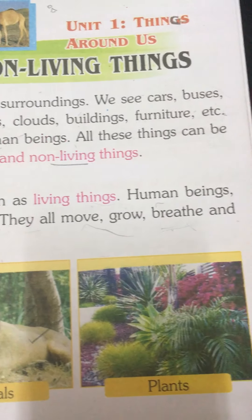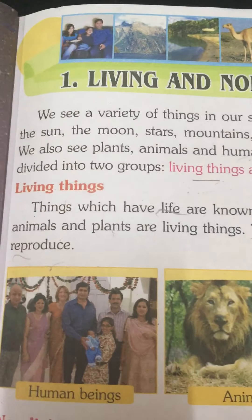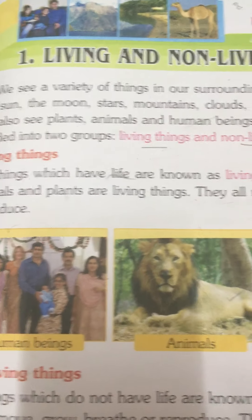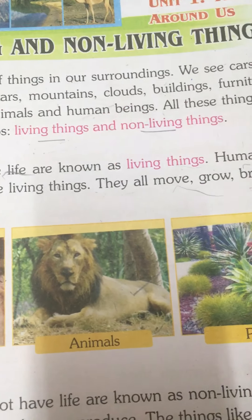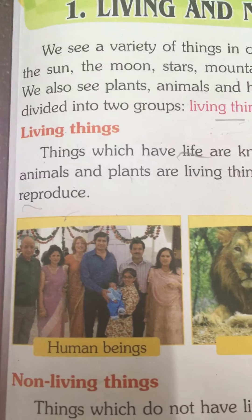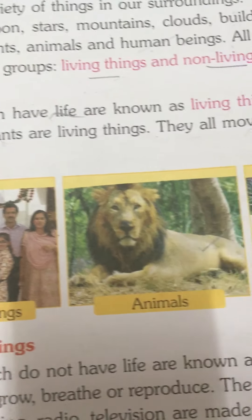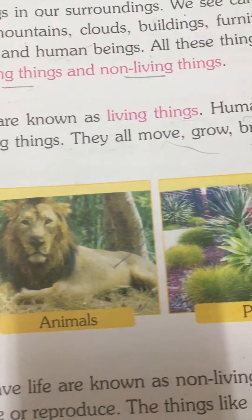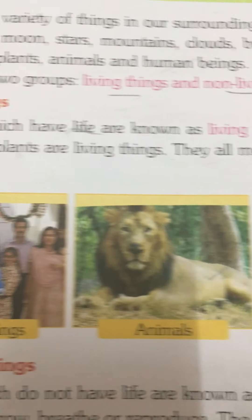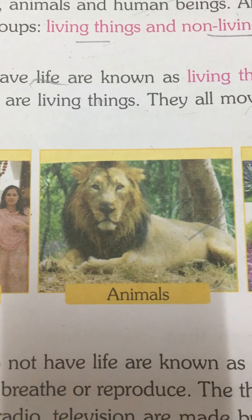All things can be divided into two groups: living things and non-living things. Living things are those which have life — human beings, animals, and plants are all living things.